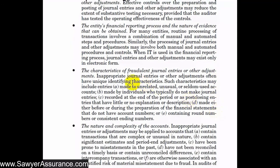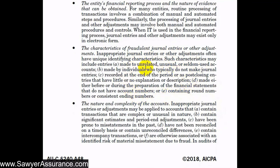We also need to consider the characteristics of fraudulent journal entries or other adjustments when selecting entries to test. Unusual journal entries might include those made to unrelated, unusual, or seldom-used accounts; odd combinations of debits and credits; entries made by individuals who don't typically make journal entries; entries recorded at the end of the period or post-closing; entries made before or during preparation of financial statements without account numbers; or entries containing round numbers or consistent ending numbers. These characteristics may indicate a higher risk of fraud or management override of controls.